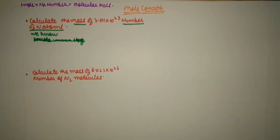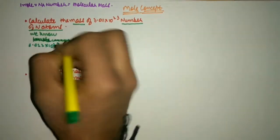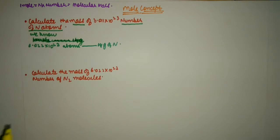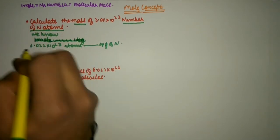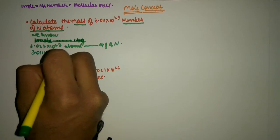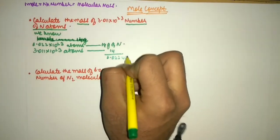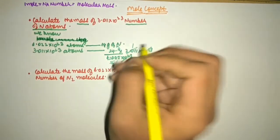The next question is: calculate the mass of 3.011 into 10 to the power 23 number of nitrogen atoms. Same concept applies. We need to make a relation between mass and Avogadro's number. So we know 6.022 into 10 to the power 23 atoms are present in 14 grams of nitrogen — we take 14 grams, not 28, because the question specifies N atoms, single N. So in 3.011 into 10 to the power 23 atoms: 14 upon 6.022 into 10 to the power 23, into 3.011 into 10 to the power 23 = 7 grams.